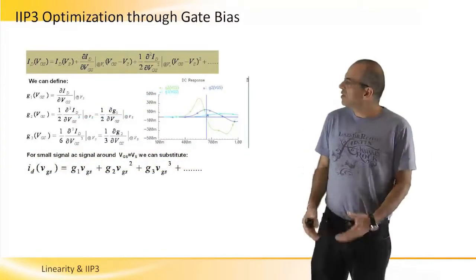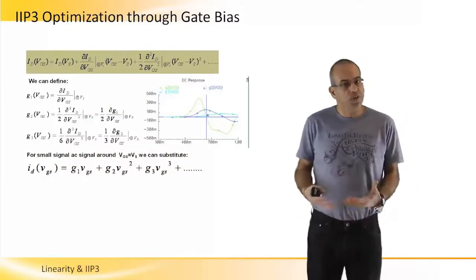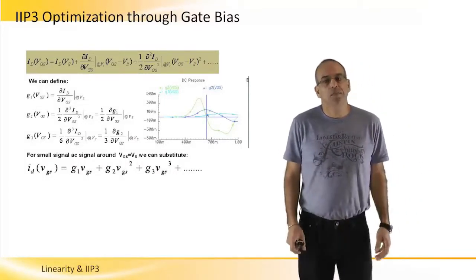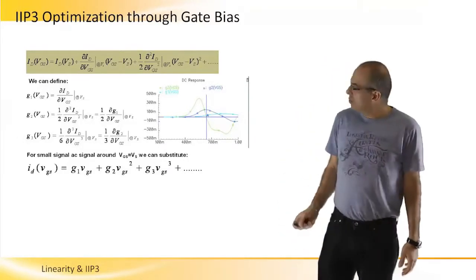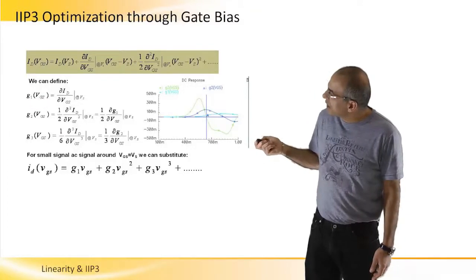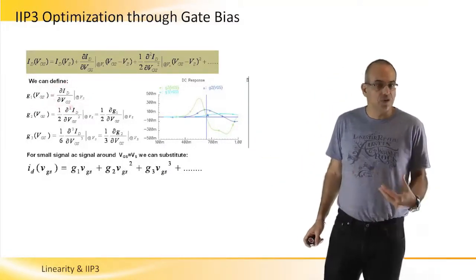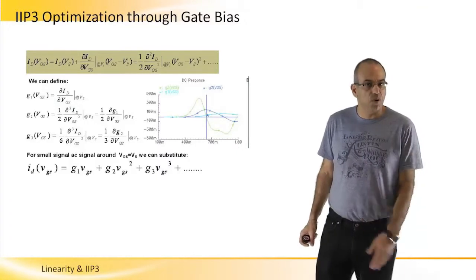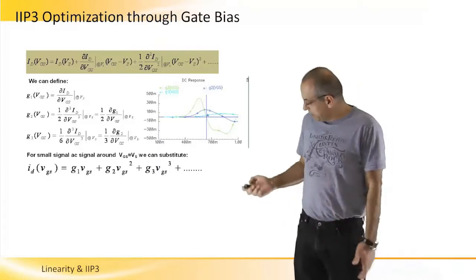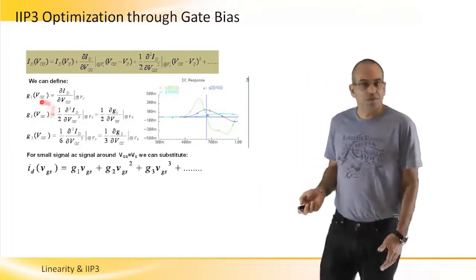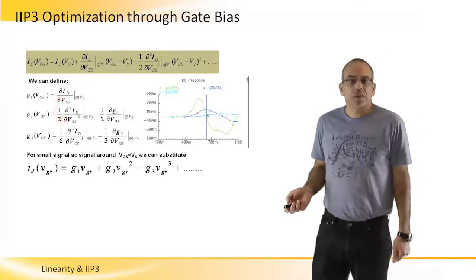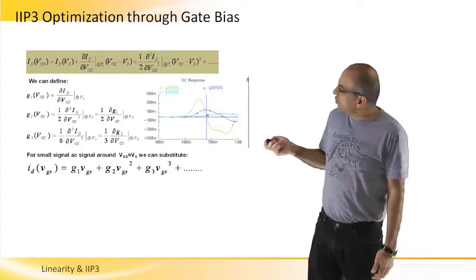So we want to take these derivatives and compare them to the coefficients that we described before as G1, G2 and G3. So we can define that G1 will be actually the first derivative of ID to VGS at the point of VGS equals VS. We can define that G2 will be the second derivative multiplied by a factor of half.